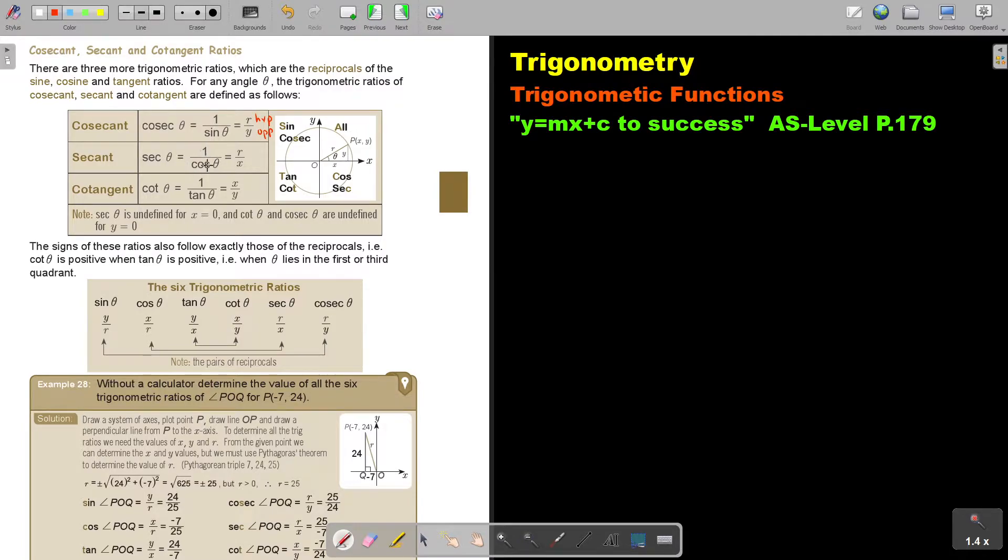Sec, sec is one over cos. So, cos was adjacent over hypotenuse. Now, it's hypotenuse over adjacent. Cot is one over tan. Where tan was opposite over adjacent, now it's adjacent over opposite. Can I show you how to remember this? You always look at the third letter. This means if I say cosec, it's the reverse of sin. Sec is the reverse of cos. And cot is the reverse of tan. So, always focus on that third letter and that will tell you.